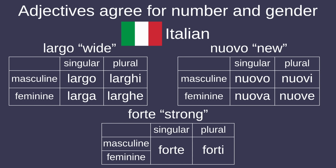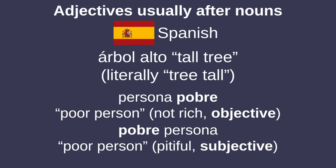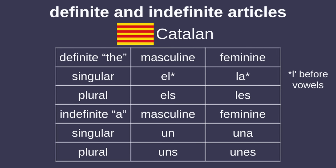Adjectives also agree for number and usually gender, and most of the time come after the nouns they modify, with a handful of exceptions, including adjectives which may come before or after the noun depending on whether their sense is subjective or objective. The comparative and superlative are often formed with the same word, with a superlative preceded by a definite article. Romance languages have pairs of definite and indefinite articles, equivalent to English 'the' and 'a,' which agree with the gender and number of the nouns they describe.